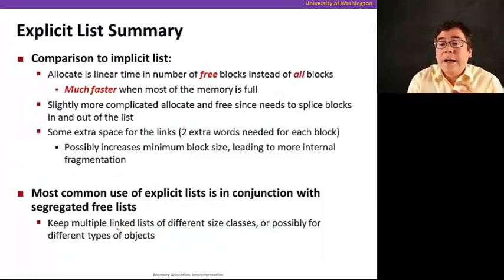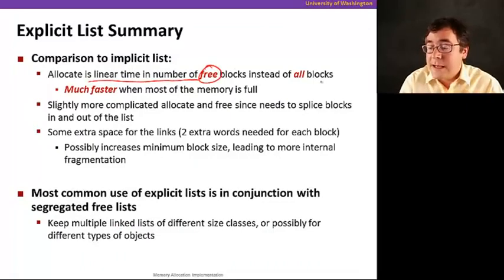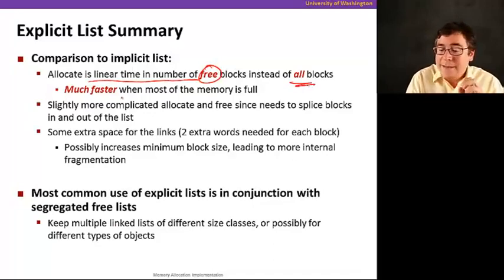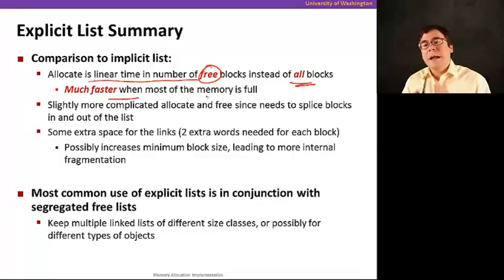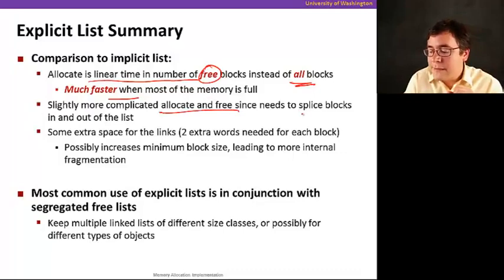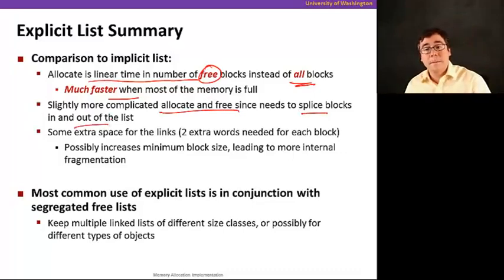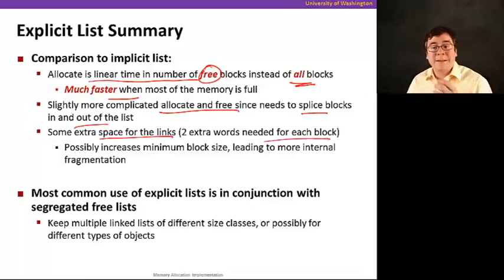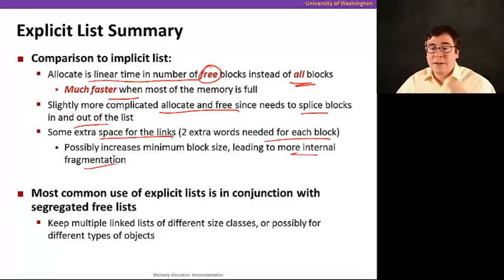Comparing explicit free list to implicit free list: allocation is linear in the number of free blocks instead of all blocks as in the implicit case. This is much faster when most of the memory is full, because in the implicit case we'd have to traverse most of memory to find a free block. It's slightly more complicated to allocate and free because it needs to splice blocks in and out of the list. We also need two extra words per block for the links, which increases minimum block size and can lead to slightly more internal fragmentation.